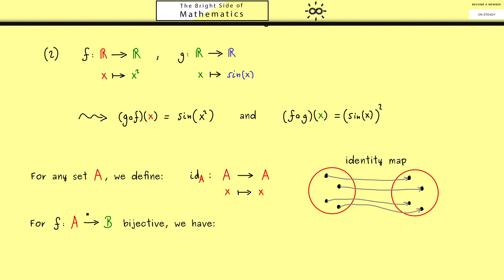On the other hand, if we take a bijective map we can look at the compositions f with the inverse map. In particular both orders make sense here because this one is a map that goes from B into B and this one is a map that goes from A into A.